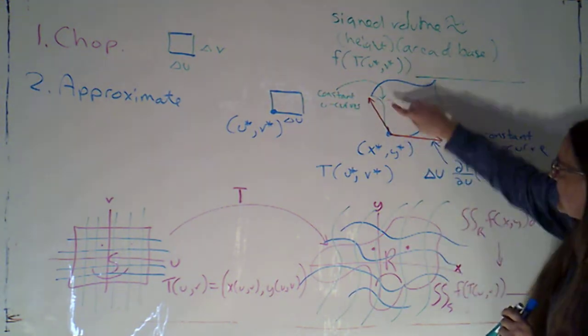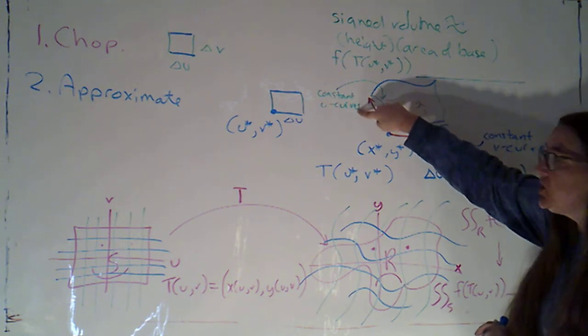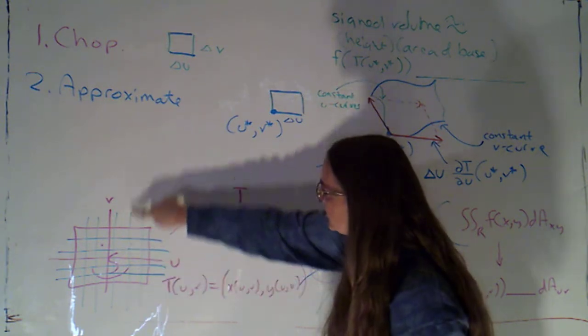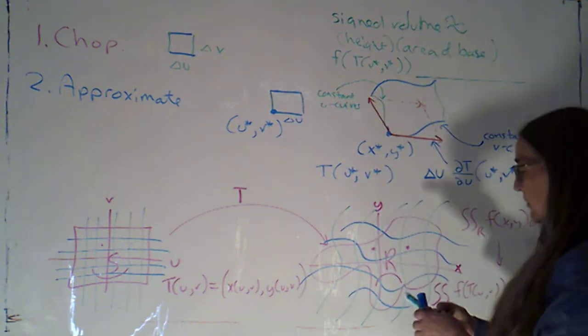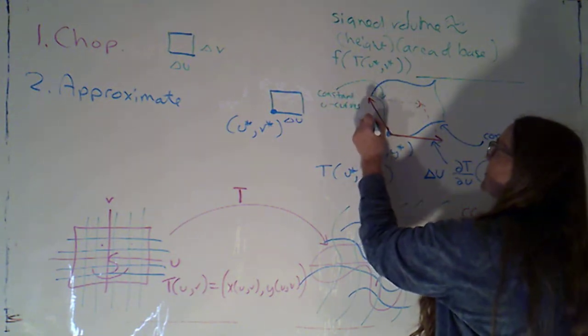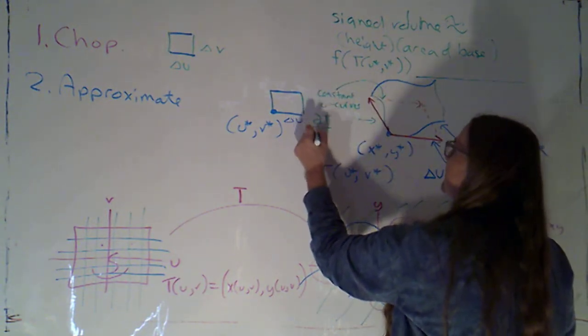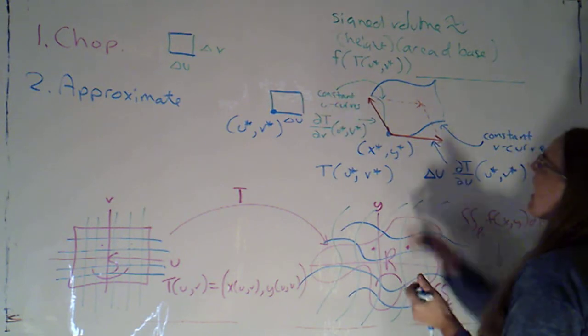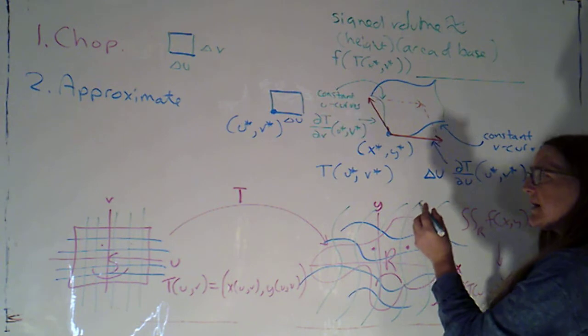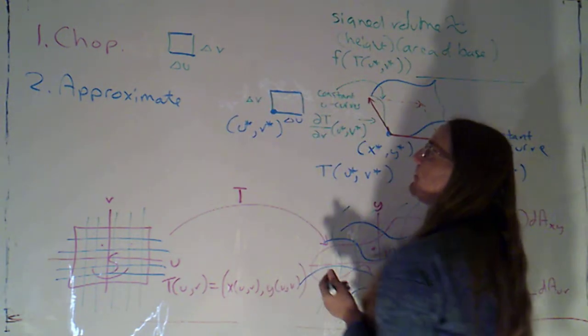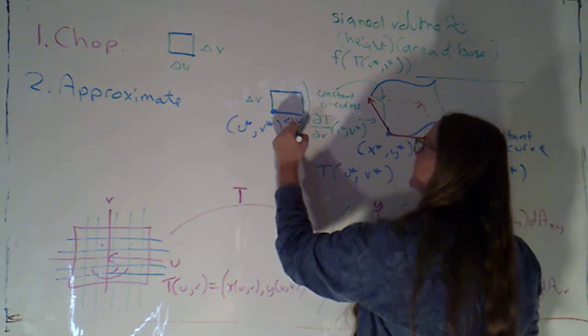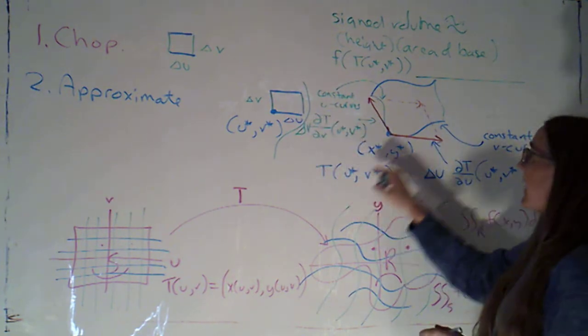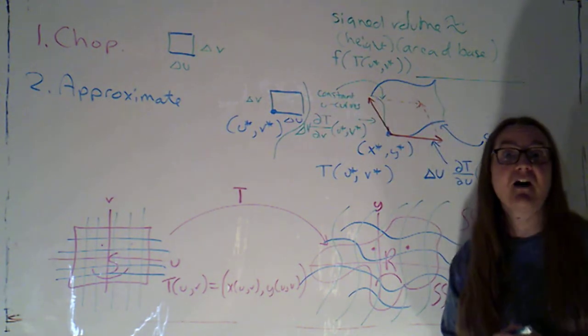Similar argument over here. This green curve we said was a constant u curve. That's what I get when I apply T to one of these green lines where u is constant and v is changing. So, if v is what's changing, then the vector that's tangent to the curve is going to be the partial of T with respect to v, again, at this point. In order to make the length about right, I want to say, but wait a minute. I'm not necessarily letting v change by one unit. I'm letting it change by delta v units. So, let's scale that derivative vector by delta v. That's going to give me these vectors that approximate these two sides.